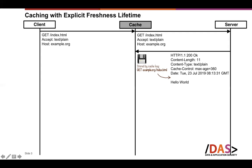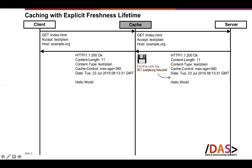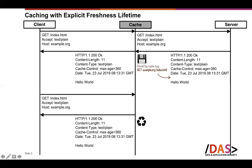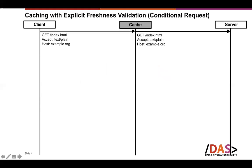The cache stores this response under the cache key — for example, 'example.com/auth/index.html' — and forwards the response back to the client. Later, when the same or another client wants to retrieve the same resource, it sends a request to the cache. The cache knows it can reuse the stored response and serves it directly to the client without contacting the server.